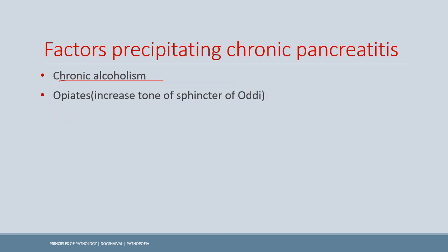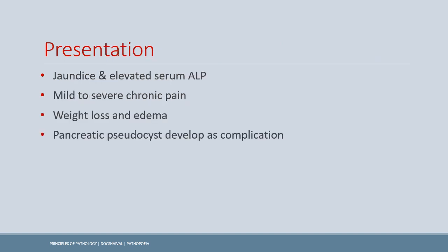High yield: the proliferating cells are periacinar myofibroblasts, also called pancreatic stellate cells. Chronic alcoholism is a major risk factor for chronic pancreatitis. Opiates are also important — they increase the tone of the sphincter of Oddi.